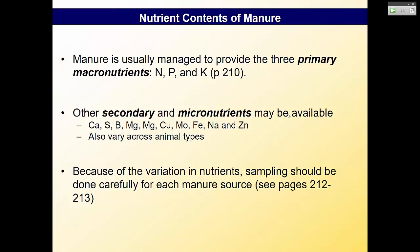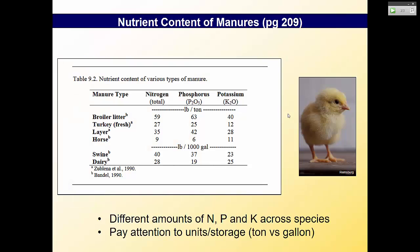Because of the variation in nutrient contents, within extension we tell people not to submit a manure sample for land application until after Thanksgiving. They can take the sample then because they'll probably be applying in March. Over wintertime, there's not going to be enough microbial activity to really reduce the nitrogen content.